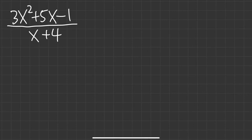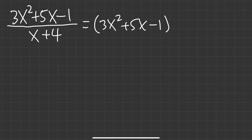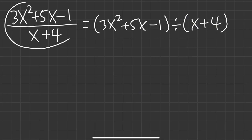Let's see how we are going to do polynomial long division, and we will do 5 examples so that we can really understand what's going on. First, we have 3x squared plus 5x minus 1 over x plus 4. Notice, sometimes the question can be written as 3x squared plus 5x minus 1 in the parentheses, divided by x plus 4. But for this video, I'm just going to keep the questions in the fraction form.